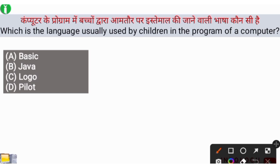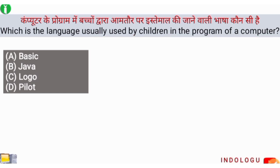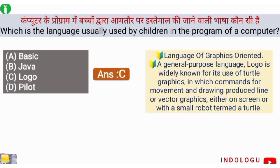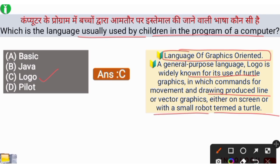Next question: Which language is usually used by children in computer programming? The right answer is option C, Logo. Logo is the language which is usually used by children in computer programming. The full form of Logo is Language of Graphics Oriented. It is a general-purpose language widely known for its use of turtle graphics, in which commands for movement and drawing produce line or vector graphics on screen.